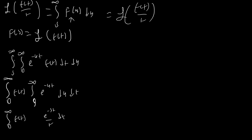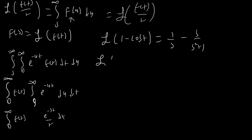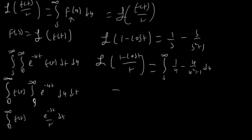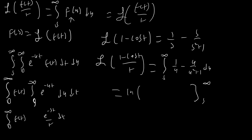Now let's apply it to our integral. We start with the Laplace transform of (1 - cos t) equals 1/s minus s/(s² + 1). Then the Laplace transform of (1 - cos t)/t equals the integral from s to infinity of (1/u - u/(u² + 1)) du, which equals ln(u) minus one-half ln(u² + 1) evaluated from s to infinity. The one-half turns into a square root, and we combine the logarithms into one. At infinity, this is ln(1) because we have first order over first order, so that disappears.